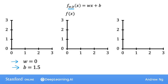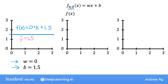When w is equal to 0 and b is equal to 1.5, then f looks like a horizontal line. The function f of x is 0 times x plus 1.5, so f is always a constant value. It always predicts 1.5 for the estimated value of y, so y-hat is always equal to b. Here, b is also called the y-intercept because that's where it crosses the vertical axis on this graph.